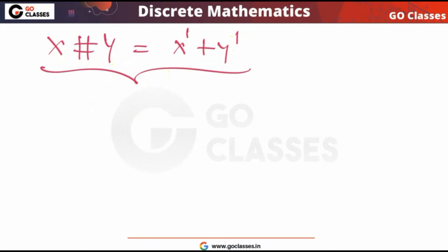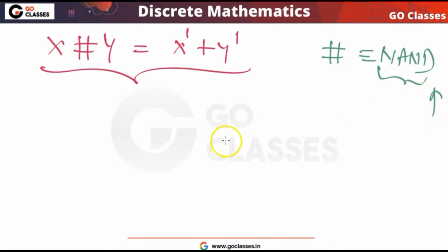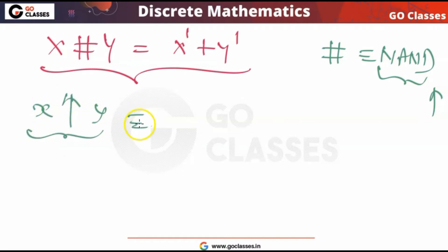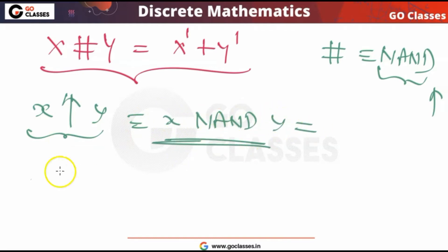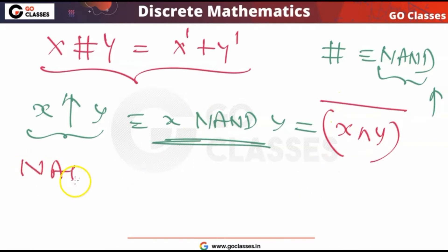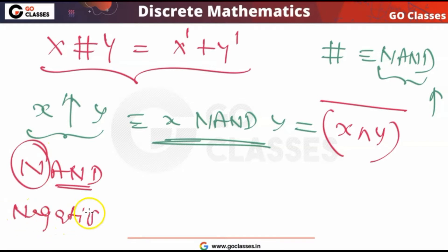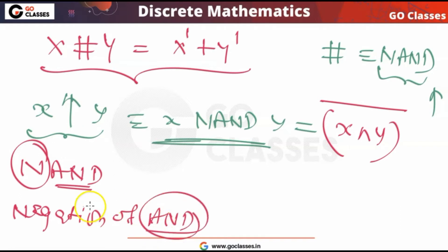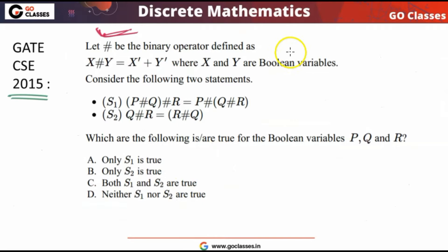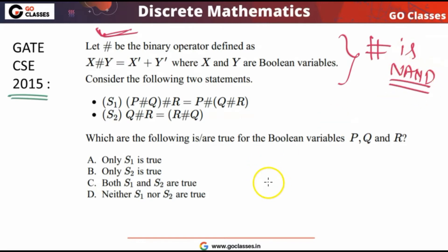You can very easily see what this operation is — can you notice? This is NAND. So this hash operation is basically your NAND operation. The symbol for NAND operation means: for X NAND Y, you first do AND and then you do negation. NAND means negation of AND, so applying De Morgan's formula gives x' + y'. So this hash operation is basically NAND.